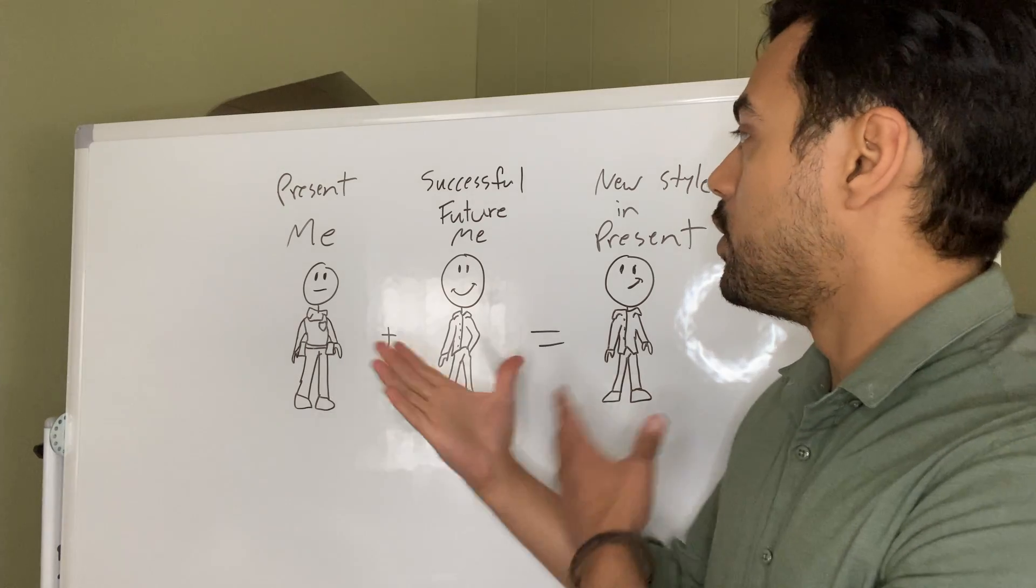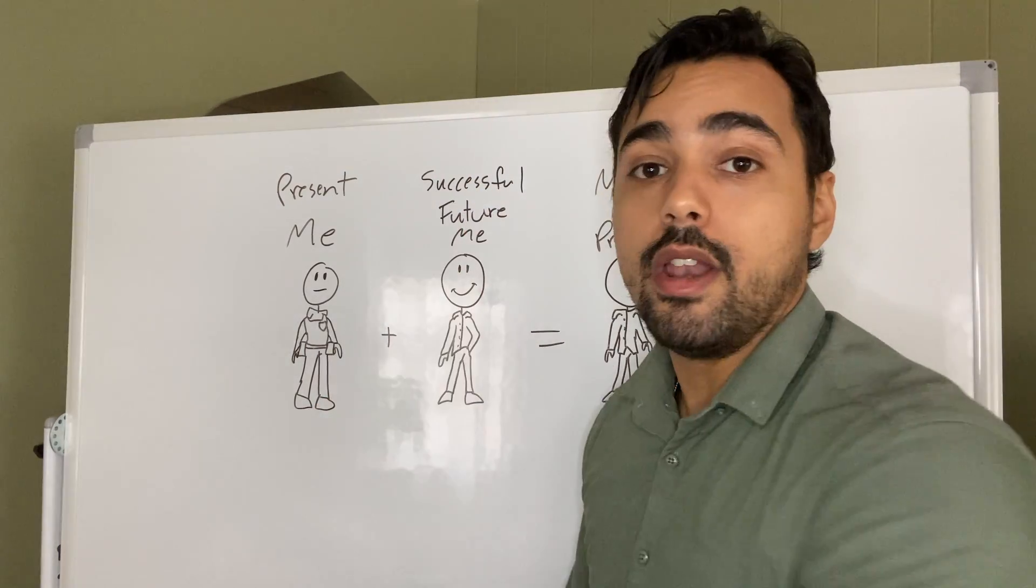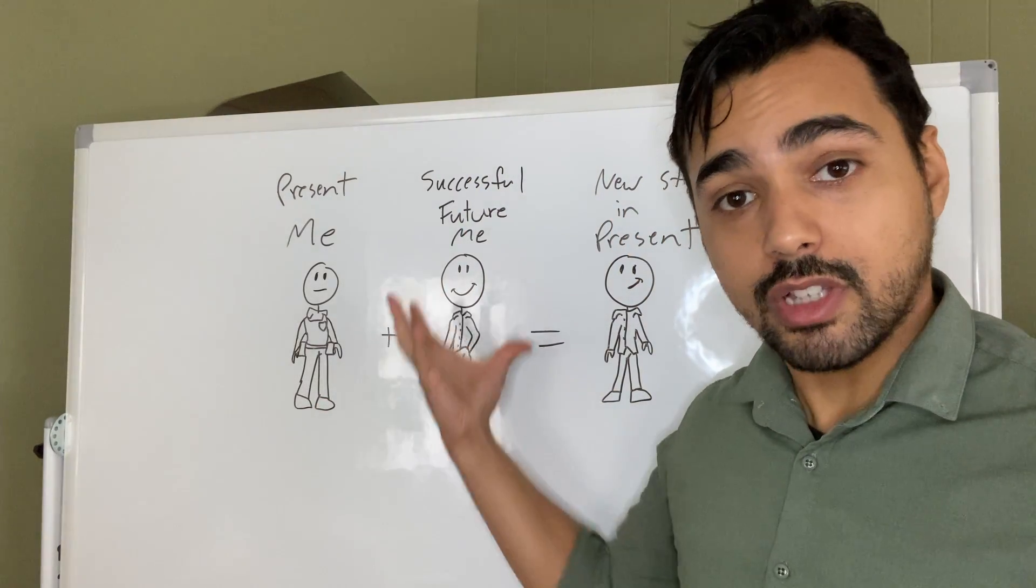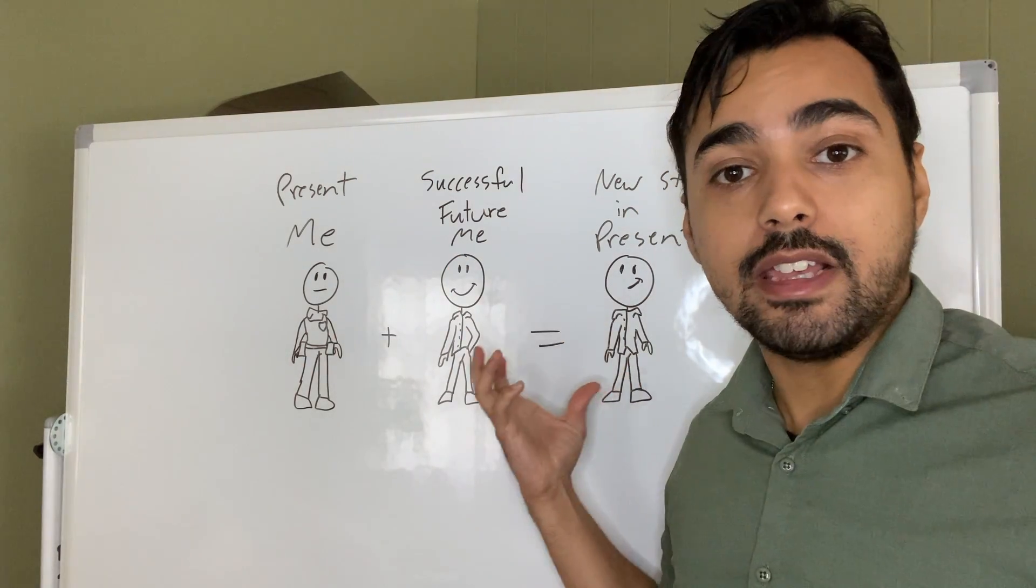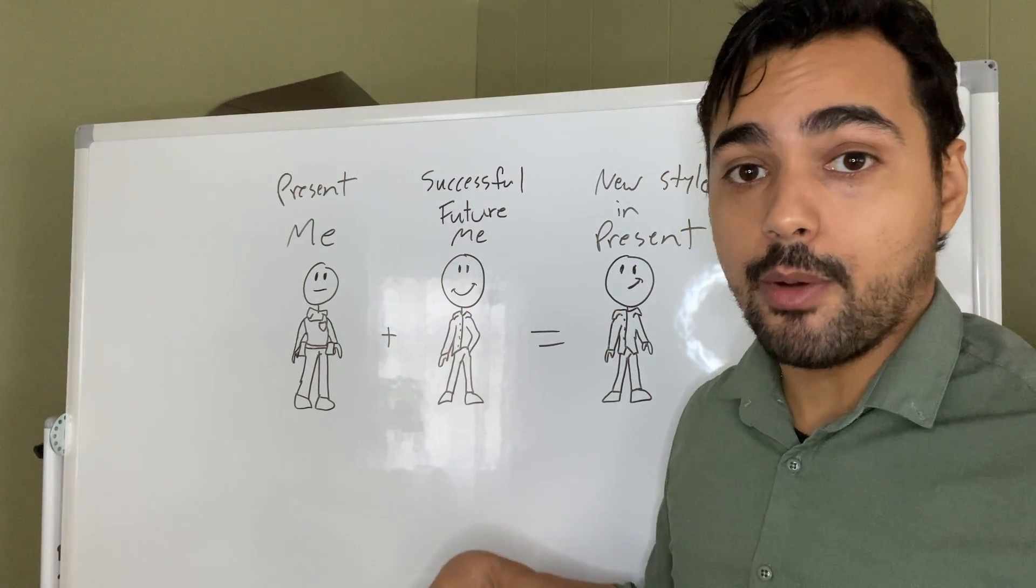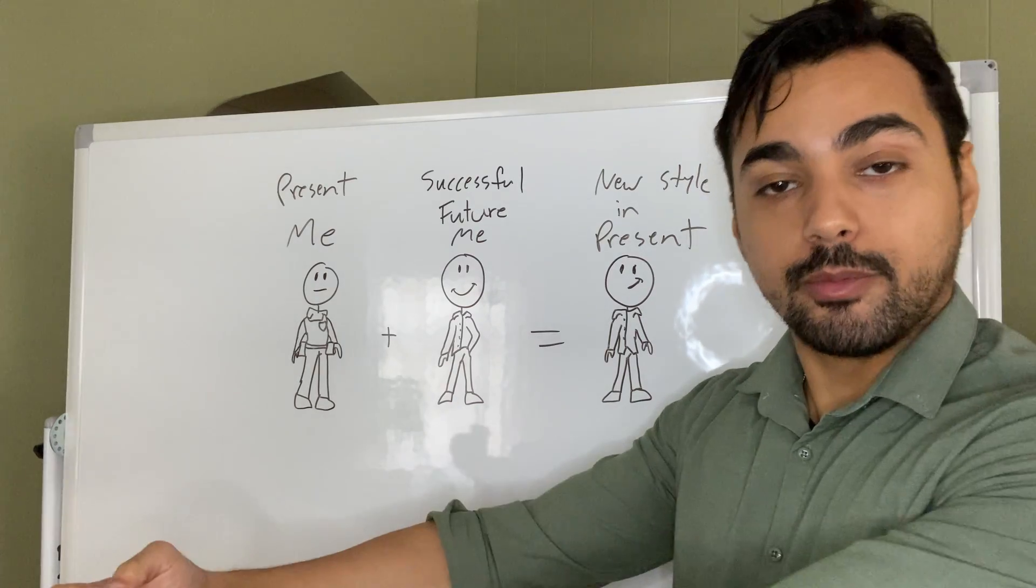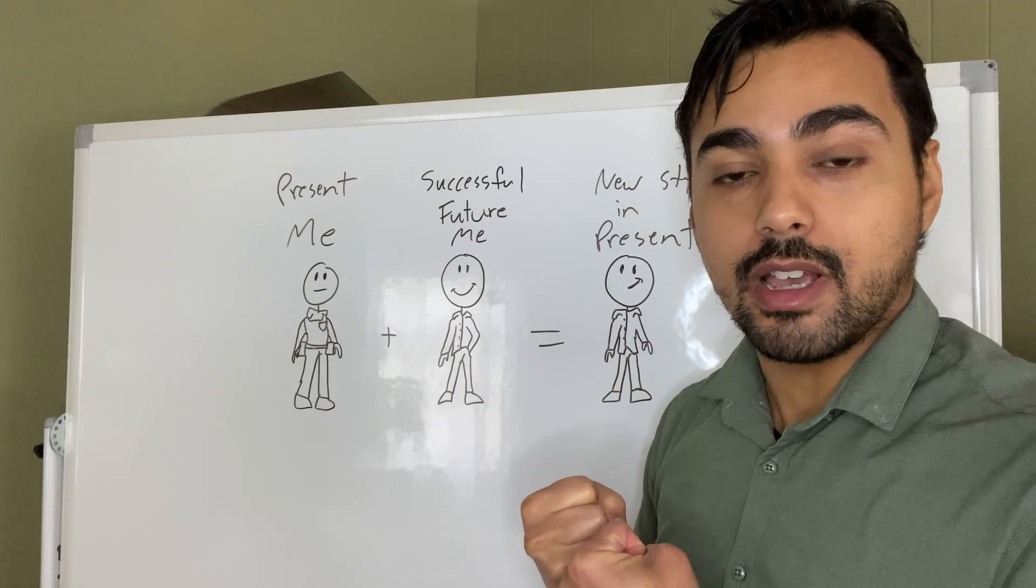So you too have to clarify what your successful future self looks like in style. And then you too can start embodying that version of you now so that you can help bring that future forward to yourself.